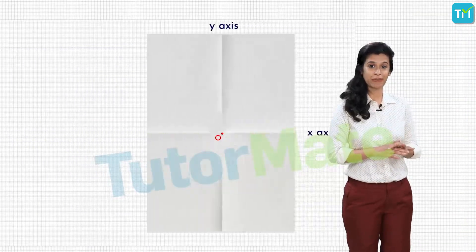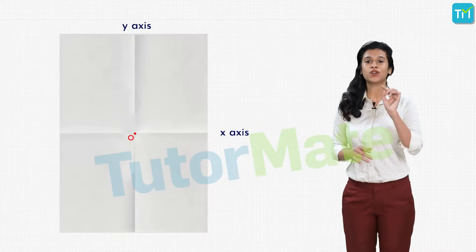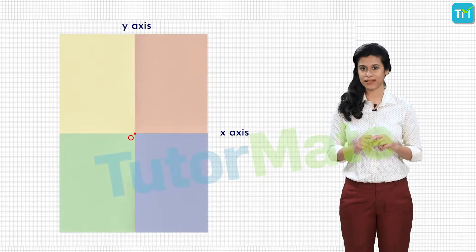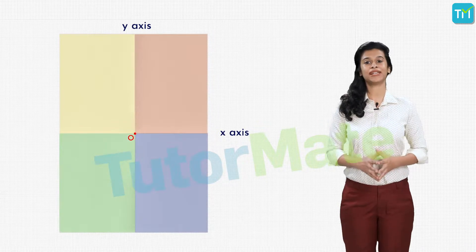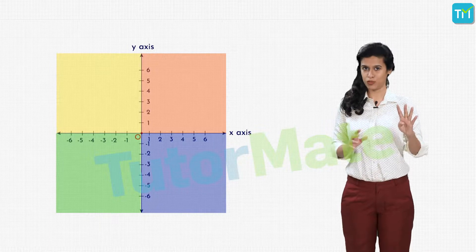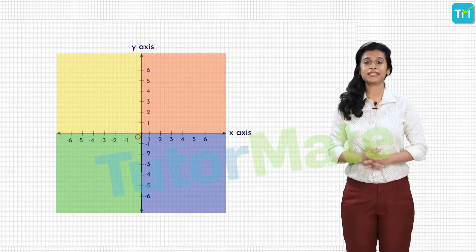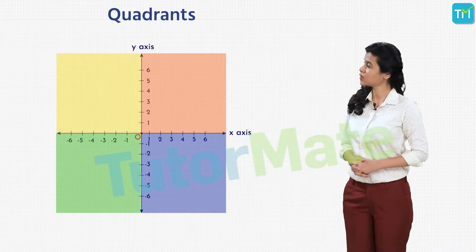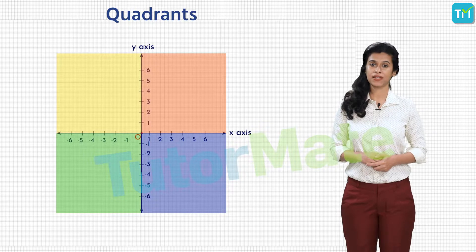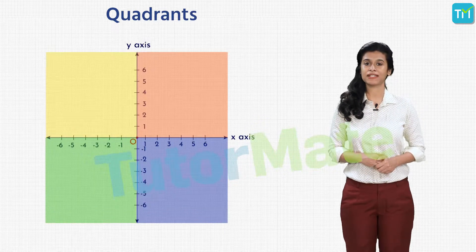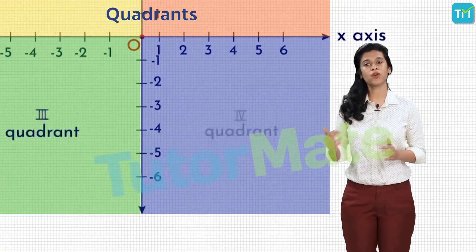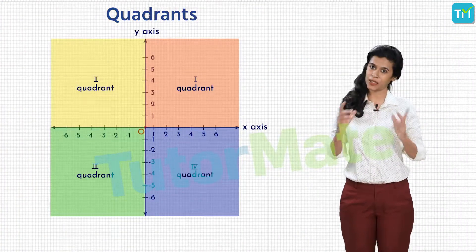If you look at the sheet of paper, the creases divide it into four parts — and this is exactly how the coordinate axes divide the Cartesian plane into four parts, called the quadrants. The quadrant that lies between the positive sides of both axes is numbered the first quadrant. Then we number the second, third, and fourth quadrant while moving in an anti-clockwise direction.